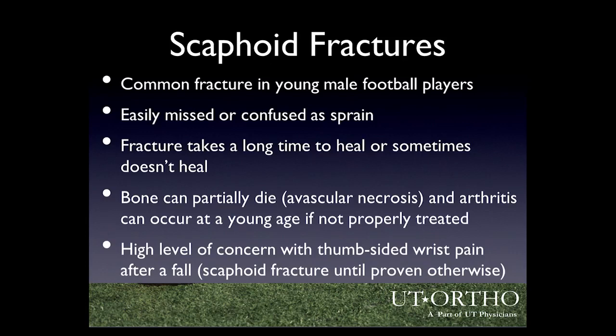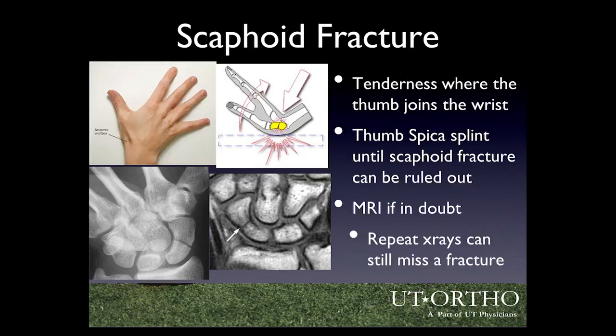The scaphoid is one of the small bones of the wrist and sustains a very common fracture, especially in young male football players, often in the middle of the season. Kids will often say it's probably just a sprain because nobody wants to get pulled from the game. They're easily missed because sometimes they really don't hurt that bad. The problem is these fractures take a long time to heal and sometimes won't heal at all. If not properly treated, part of the bone can die — avascular necrosis — leading to a very predictable form of arthritis in a 22-year-old. Any kid who's had a fall with thumb-sided wrist pain should be presumed to have a scaphoid fracture until proven otherwise.